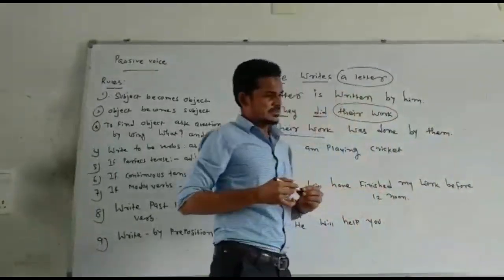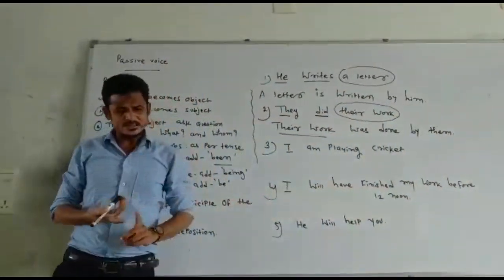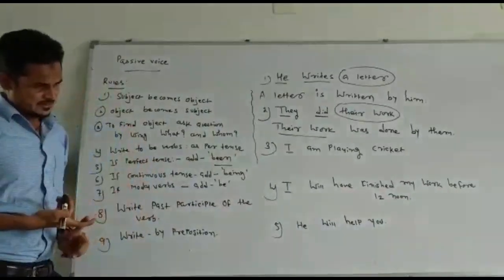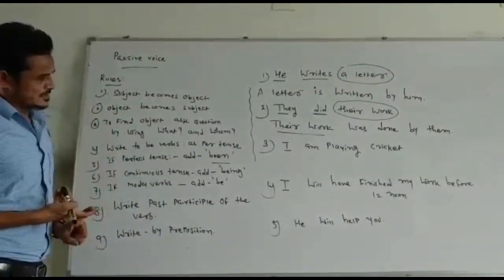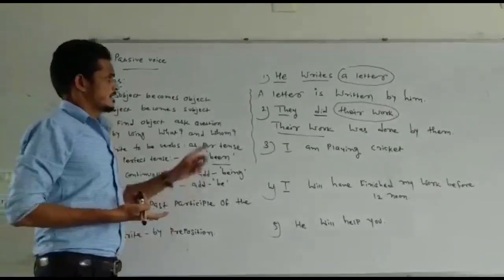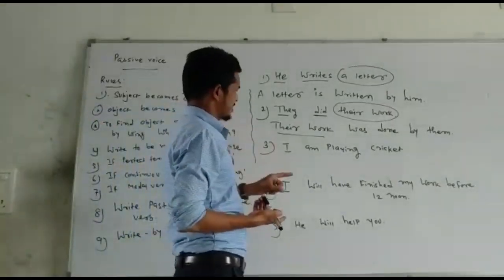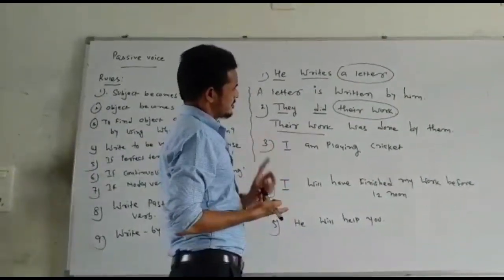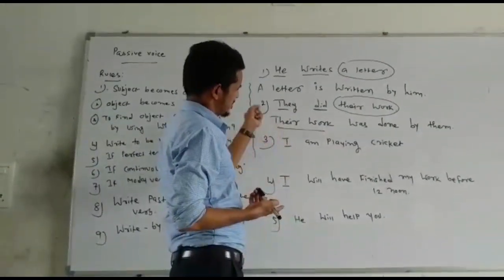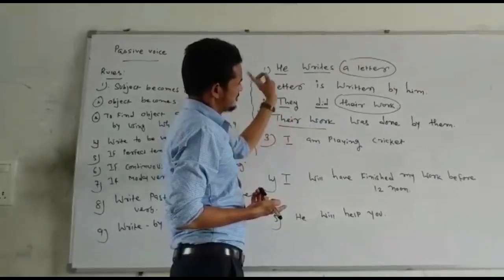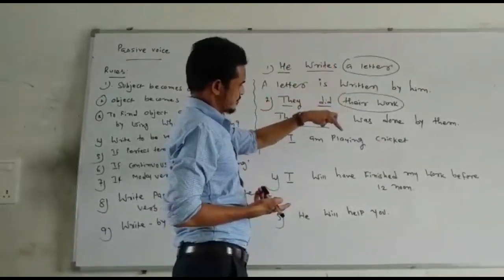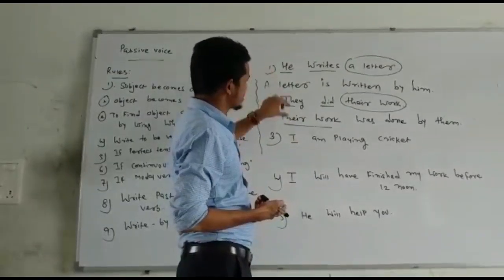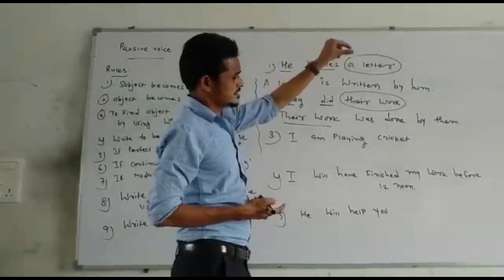So, for simple present tense and simple past tense: in simple present tense — am/is/are + past participle + by preposition. In simple past tense — was/were + past participle + by preposition. If a subjective pronoun is given, it will be changed into the objective pronoun. If any person's particular name (noun) is given, we don't have to make any change in it.